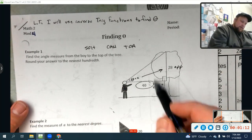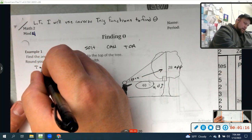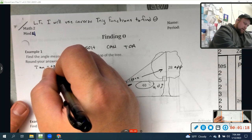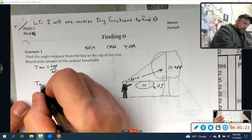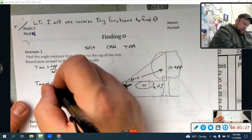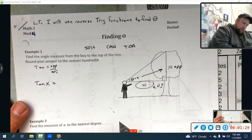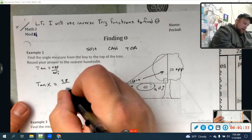Which one of those uses the opposite and adjacent? It's tangent right here. So we know that tangent equals opposite over adjacent. So I know that the tangent of some angle, x, is going to equal my opposite of 28 over my adjacent of 40.